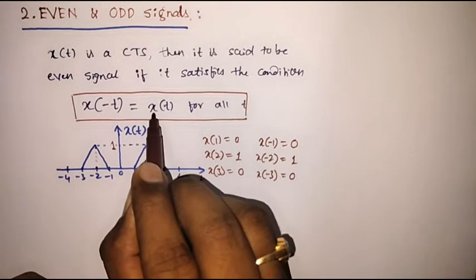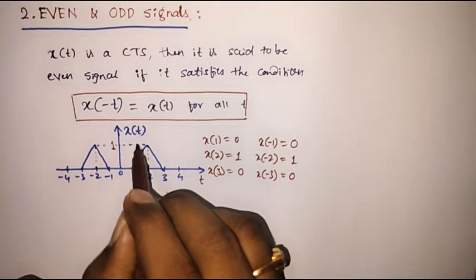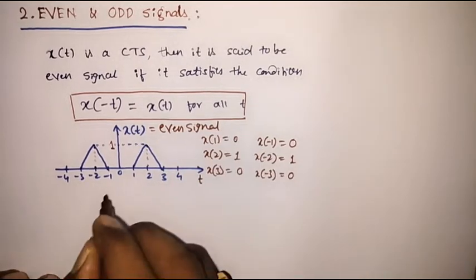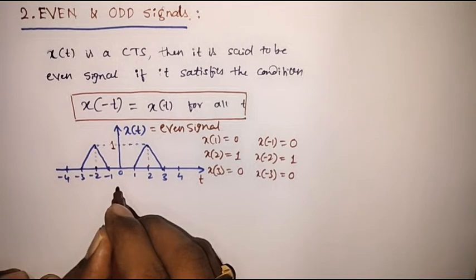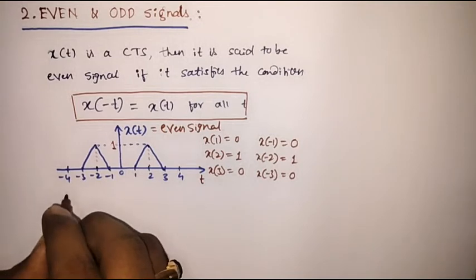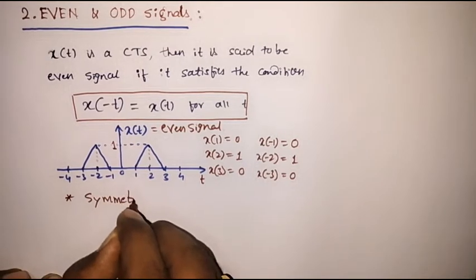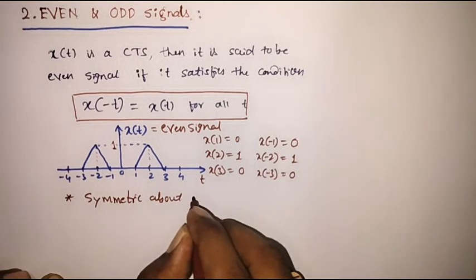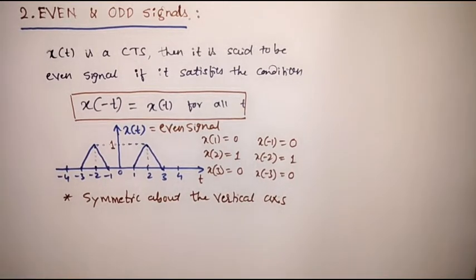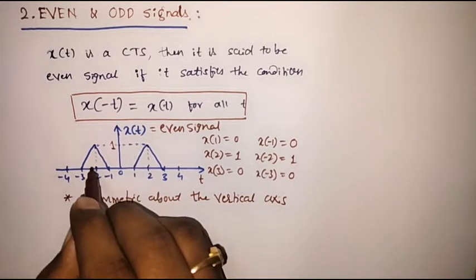Therefore, it satisfies the condition x of t is equal to x of minus t. Therefore, we can say that x of t is an even signal. We can observe that an even signal is symmetric about the vertical axis. That is, this part is the mirror image of this part.